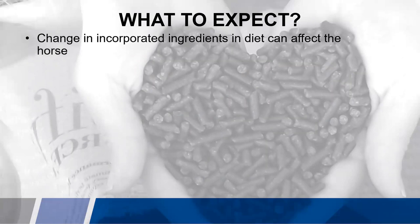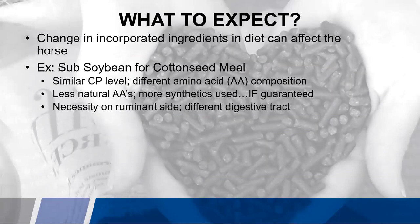Given that there is a change in incorporated ingredients in the diet, this can affect the horse. For example, if you're using soybean meal in the formula and it gets substituted for cottonseed meal — soybean meal and cottonseed meal both have a similar crude protein level in the low to mid 40%, however they have a different amino acid composition. There are fewer natural amino acids in cottonseed meal relative to soybean meal, so more synthetics are going to be used to meet those requirements, if they are guaranteed on the guaranteed analysis.